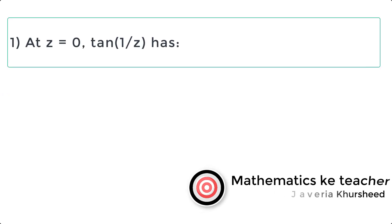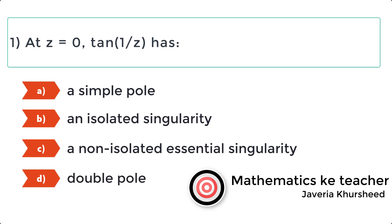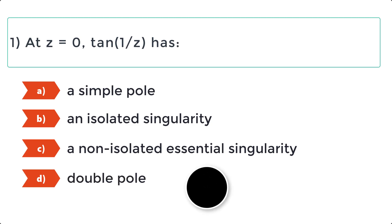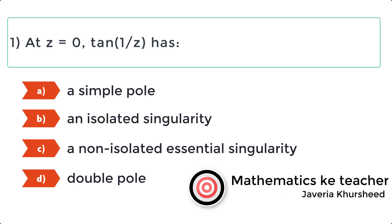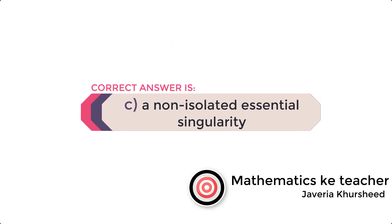Question 1: At z equals 0, tan(1/z) has: a) A simple pole, b) An isolated singularity, c) A non-isolated essential singularity, d) Double pole. Correct answer is c) A non-isolated essential singularity.